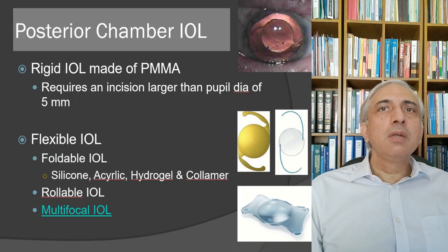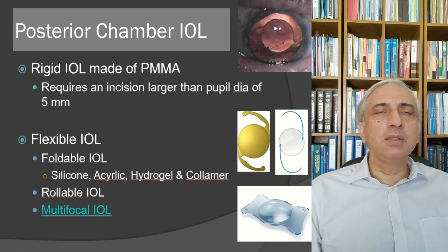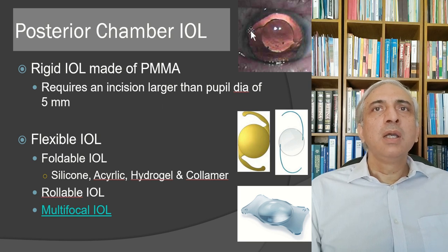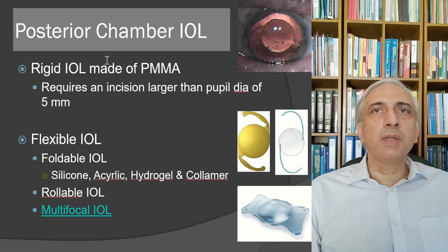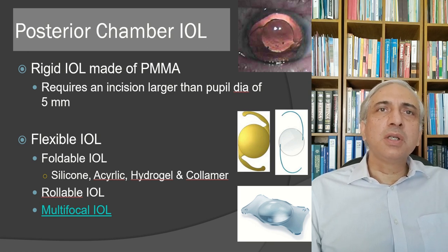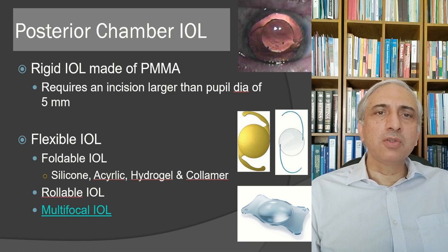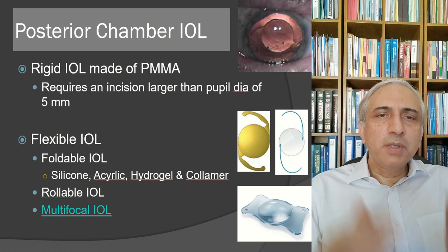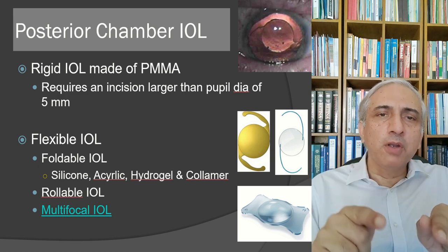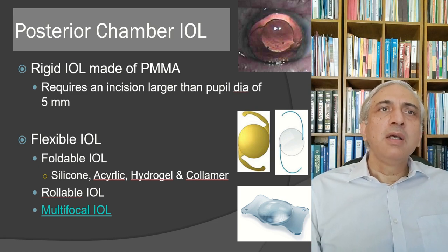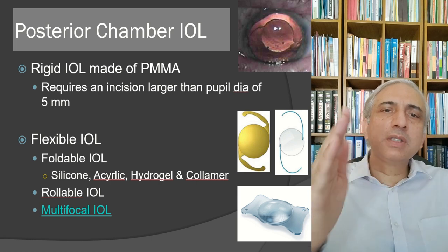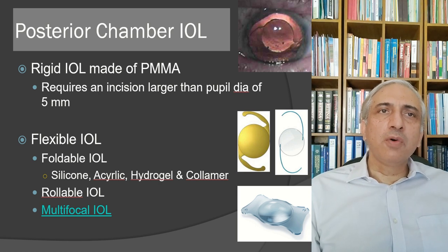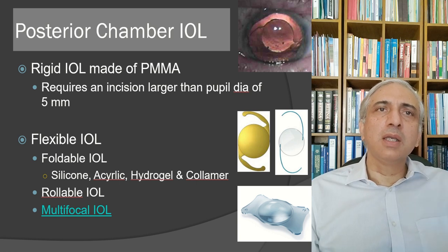Posterior chamber IOLs can be rigid PMMA — with a 5.5 mm optic requiring an incision larger than 5 mm — or flexible foldable IOLs. Foldable IOLs include silicone, acrylic hydrogel, and collamer materials. They can also be rollable or multifocal.